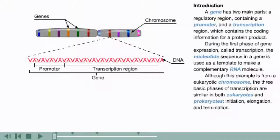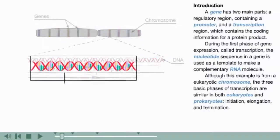A gene has two main parts: a regulatory region containing a promoter, and a transcription region which contains the coding information for a protein product. During the first phase of gene expression called transcription, the nucleotide sequence in a gene